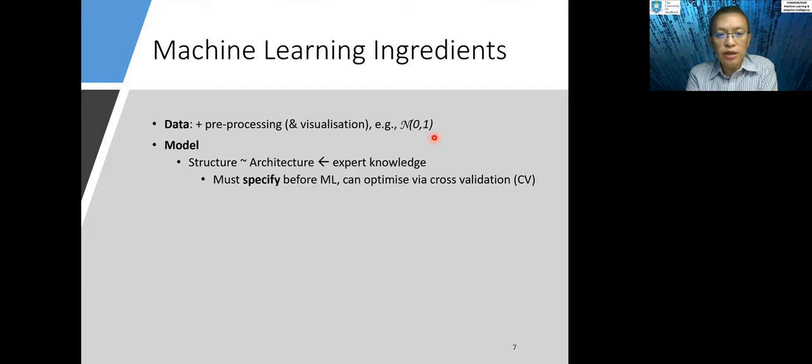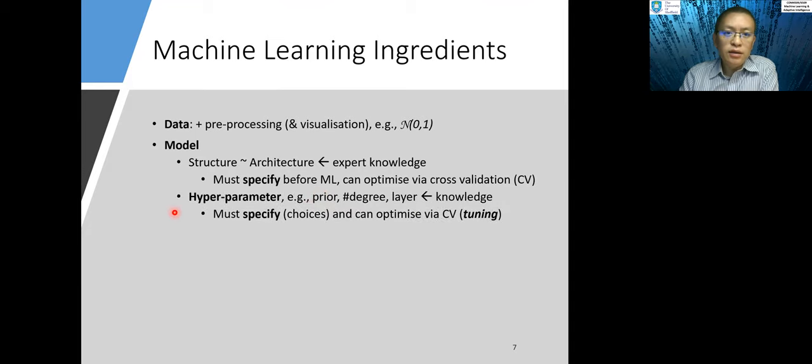And the second key ingredient of machine learning is the model. In terms of machine learning model, firstly, we need to have a structure or sometimes it's called architecture. And this often you need expert knowledge. And we must specify the structure or the architecture before we do any learning. And if we have multiple options for structures, then we can optimize the structures through cross-validation. And in machine learning model, another very important terminology and concept is hyperparameter. So this is a parameter that we must specify as design choices. And we can also optimize them through cross-validation. And this is sometimes called tuning.